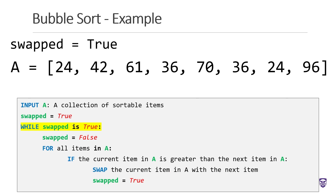At this point, we've made it through the list one time and pushed the largest value to the end. In this case, the last value in the list is 96, and it is in the correct order — the largest of all values. However, we need to keep doing this process until all values are in the correct order. We'll know this has happened once we make it through the list without needing to swap any values. In this last run, we did swap some values, which is why swapped is set to true. So we will need to run through the list again. If we made any swaps, we run again; if we didn't make any swaps, the list is sorted and we exit the algorithm.